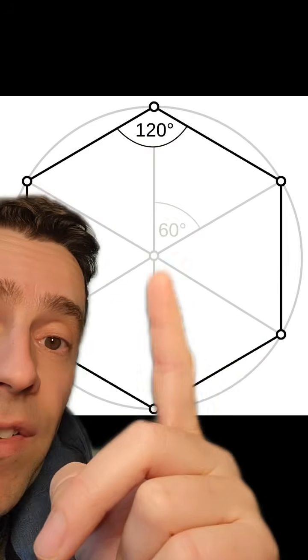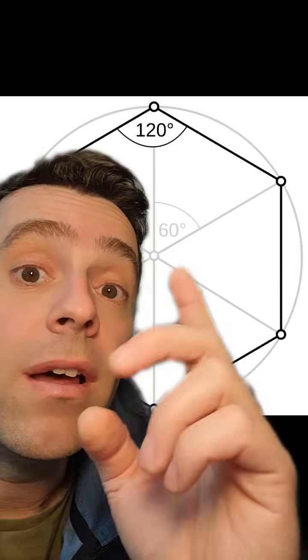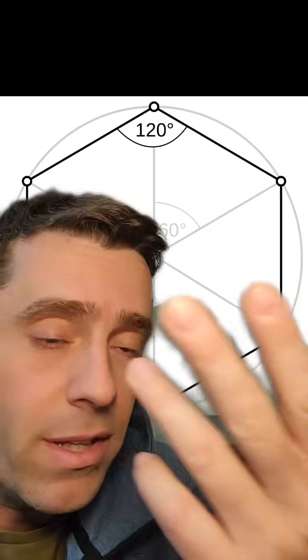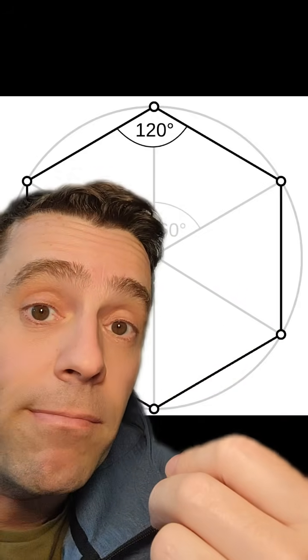By the way, this method of inscribing and circumscribing polygons to a circle was used by Archimedes to come up with his approximations of the number pi.